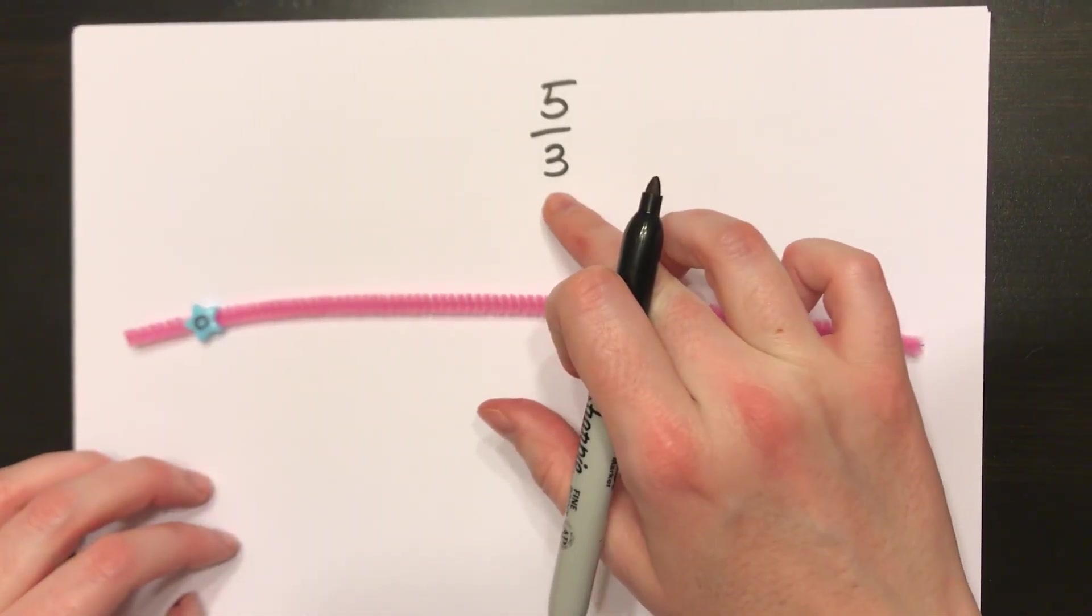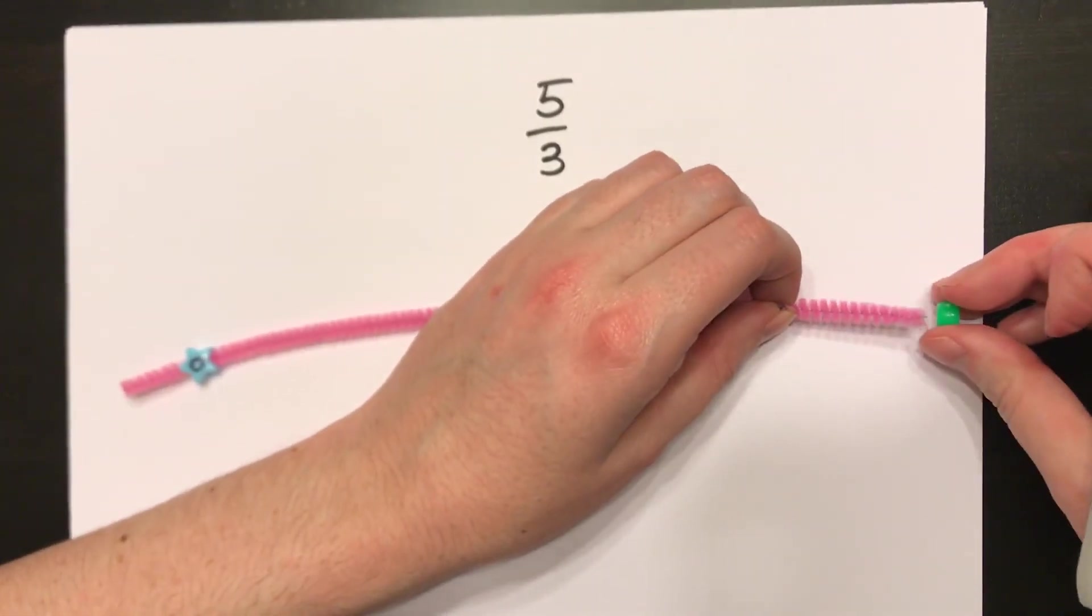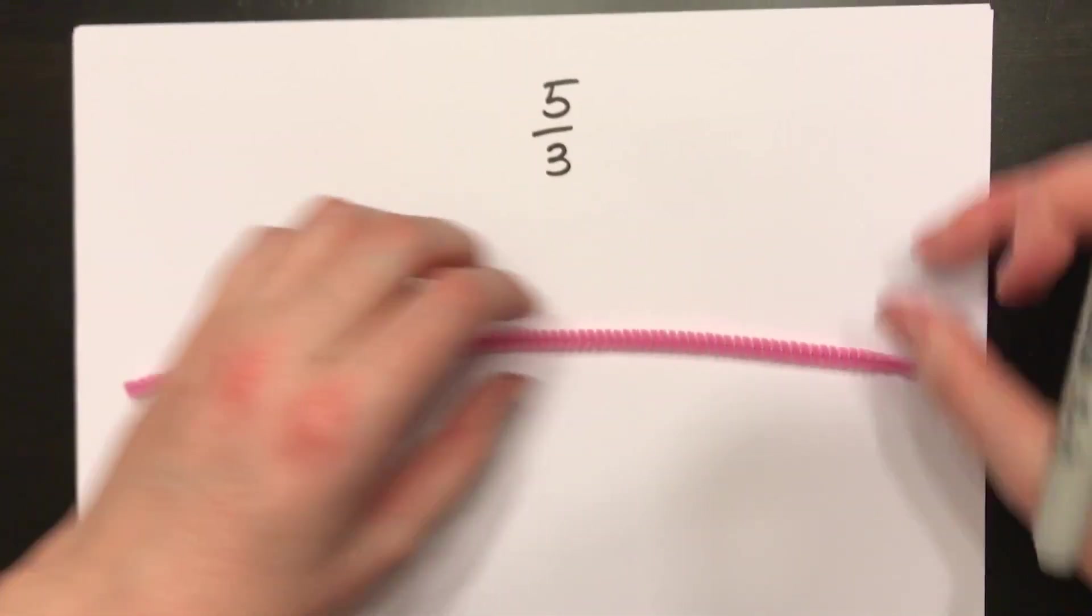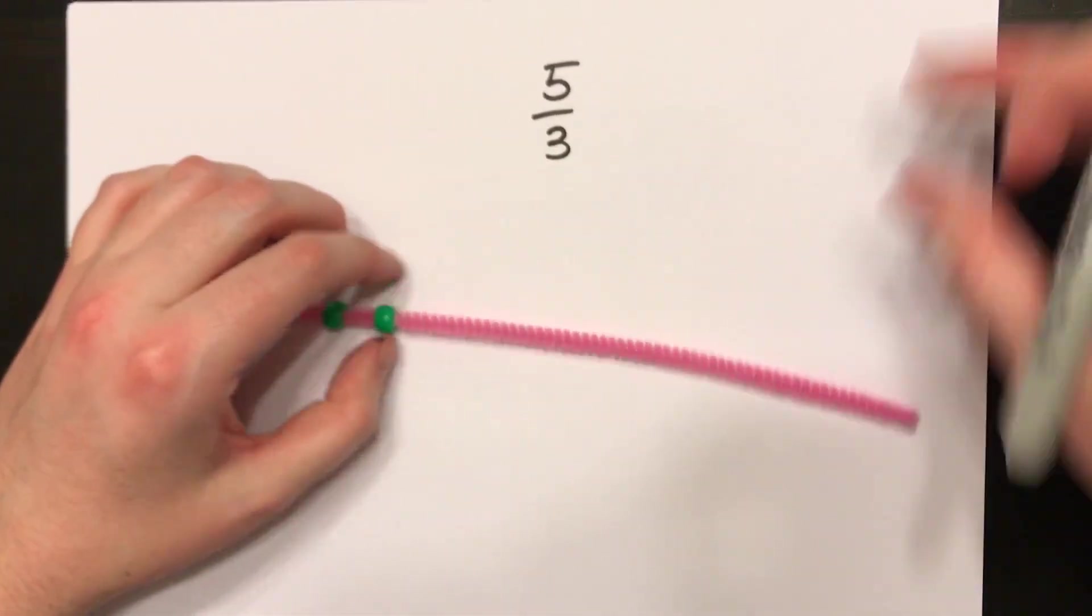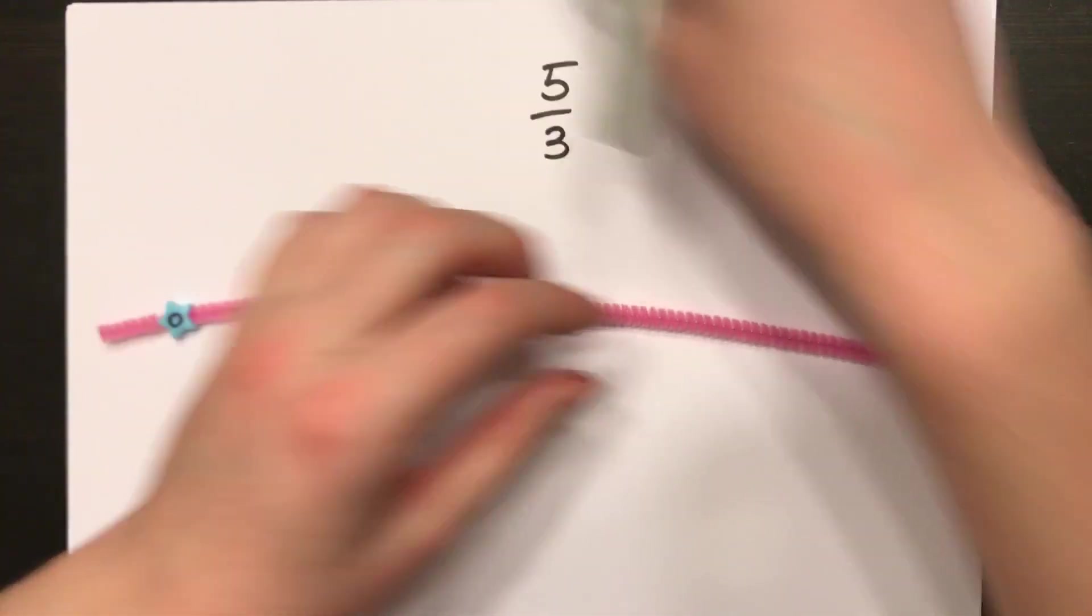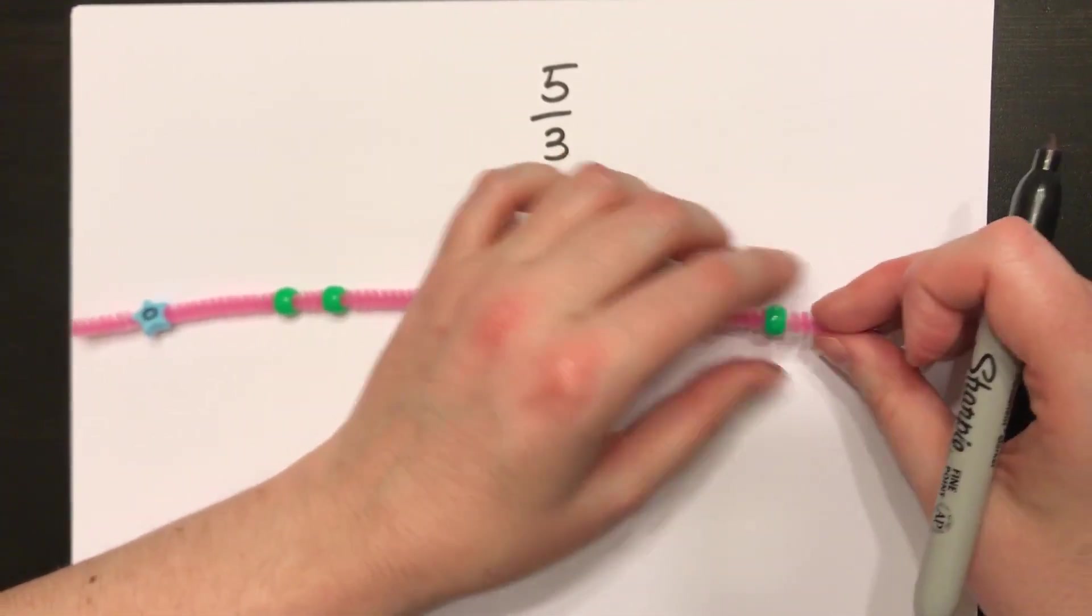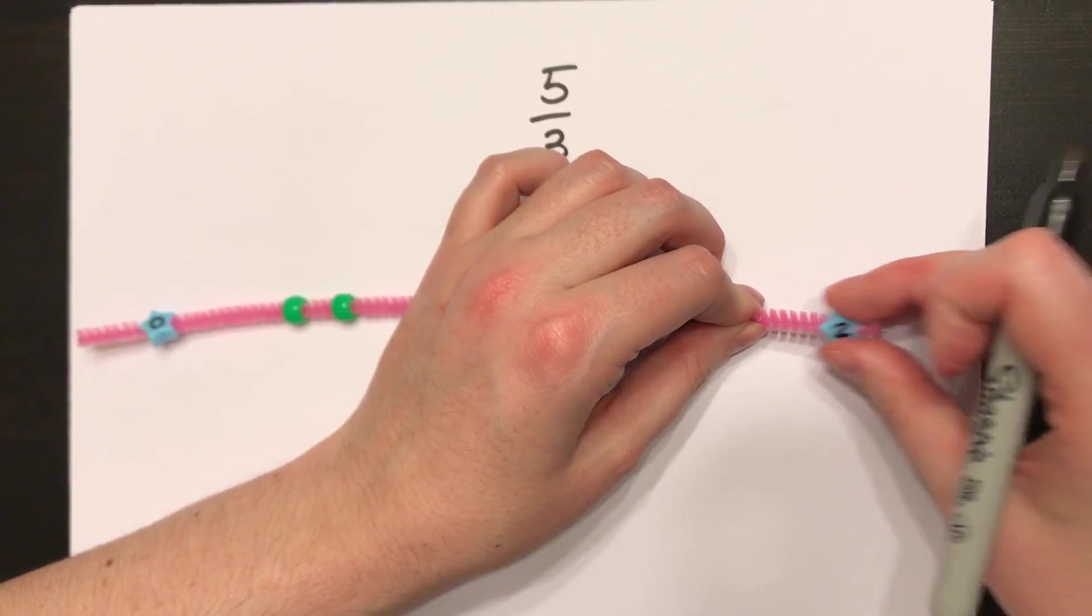If I want to break in between my wholes into three equal parts, I'd only need two beads between my wholes to do that. 1, 2, put my 1 bead on, and then I need another two beads. 1, 2, and then I put my second whole number on there.